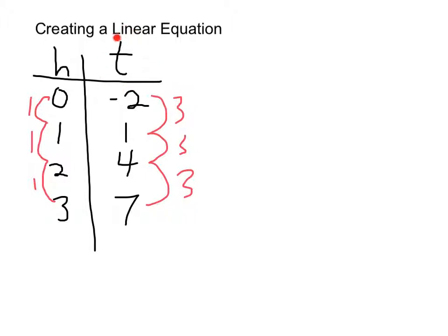It's also important to put these little marks on here to show how much goes up every time, because we need that when we're making our linear equation. Here T is our independent variable, so I'm going to write that first. We're going to have T equals — and now we have to figure out what T equals, and that's where these numbers become important. What this is saying is T is always 3 times H, because every time H goes up by 1, T goes up by 3. So I'm going to start off by writing T equals 3 times H.